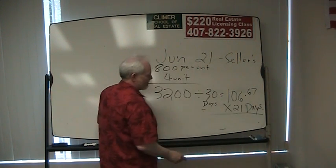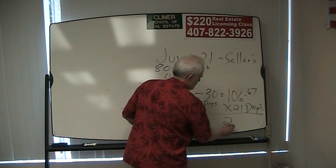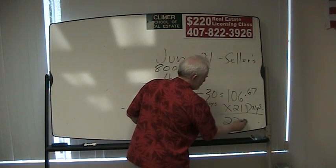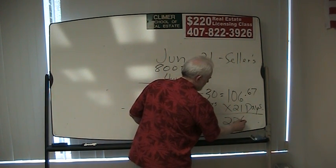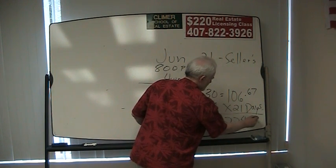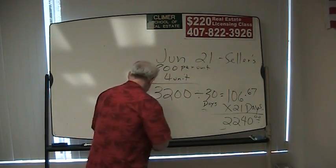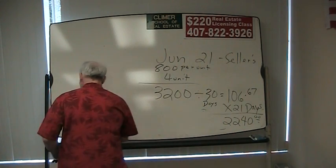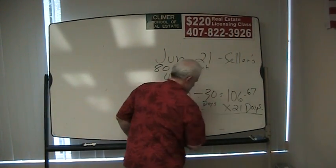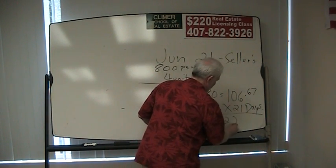Take that number times 21 days. The calculator gives you $2,240. So it's $2,240.